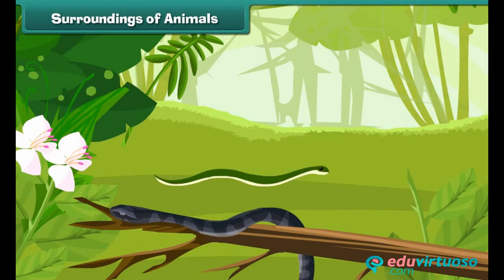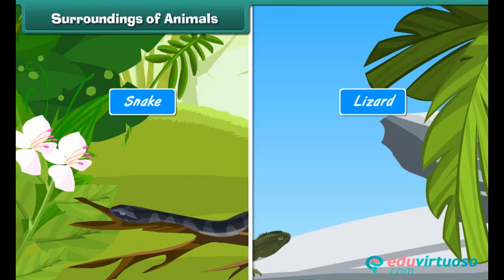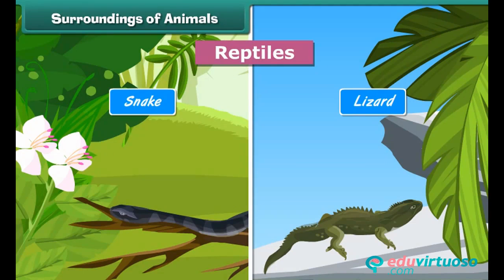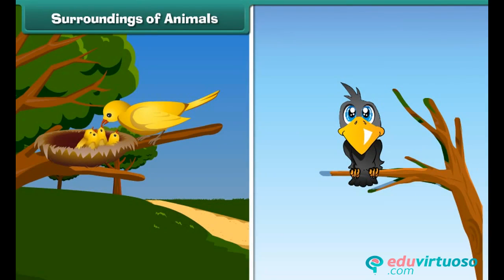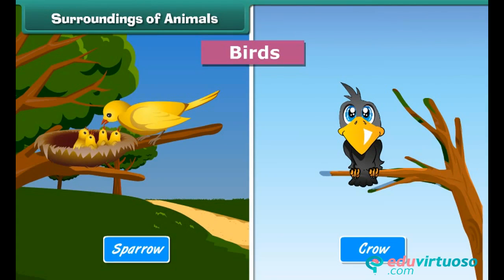Some animals like snake, lizard, etc. creep on land, walls, and trees — they are called reptiles. Some animals like the sparrow, crow, etc. live on trees — they are called birds.